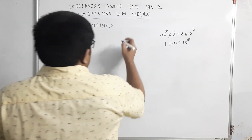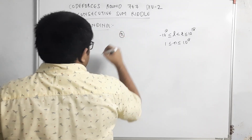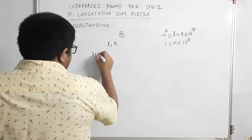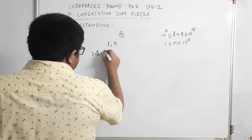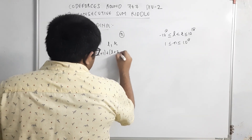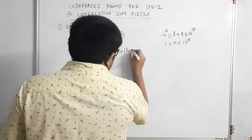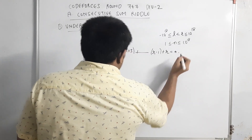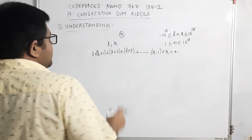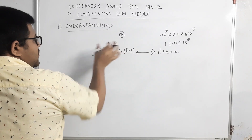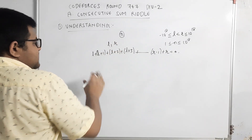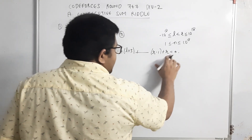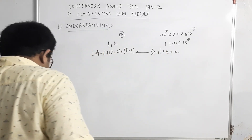Humein koi ek integer diya gaya hai n, toh humein output mein 2 integers dene hain l and r, such that l + (l+1) + (l+2) + ... + (r-1) + r = n. Yeh condition honi chahiye — input mein n diya gaya hai, output mein 2 integers l and r display karne hain such that l se lekar r tak ke saare integers ka sum n ho, including l and r.